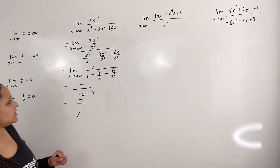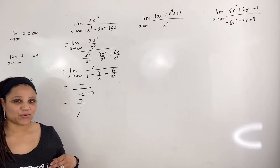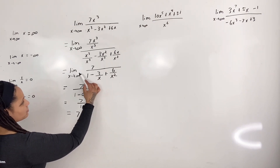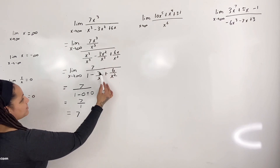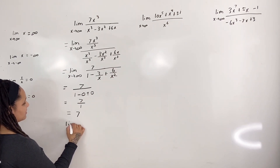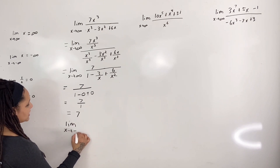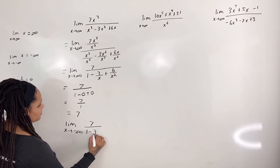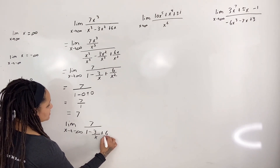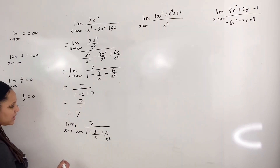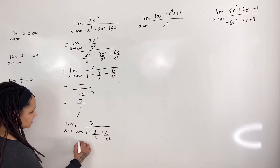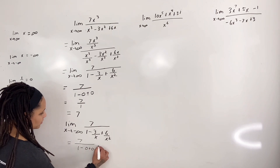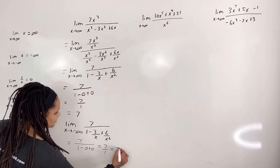If we take the same expression and let x go to negative infinity, we go through the same procedure and arrive at the limit as x approaches negative infinity of 7 over 1 minus 3 over x plus 6 over x squared. Applying the limit gives 7 over 1 minus 0 plus 0, which equals 7 over 1, which equals 7.